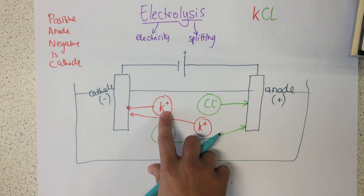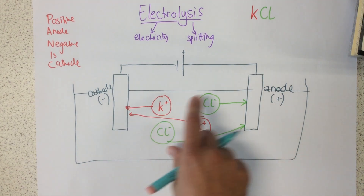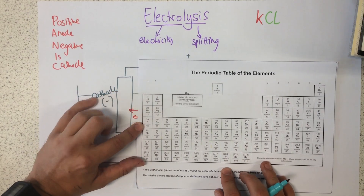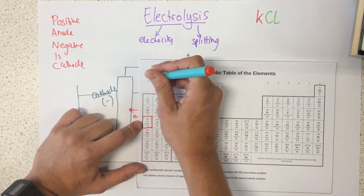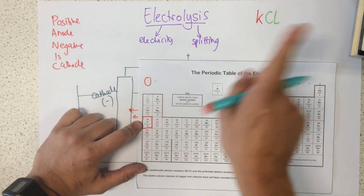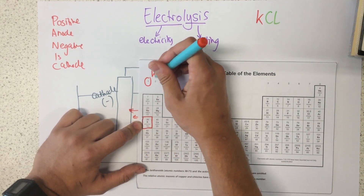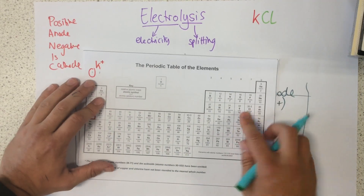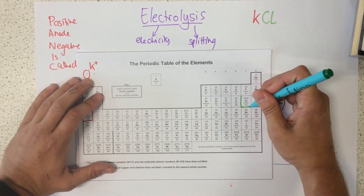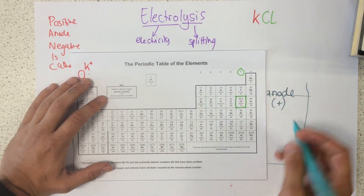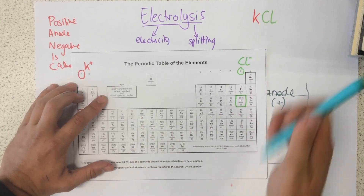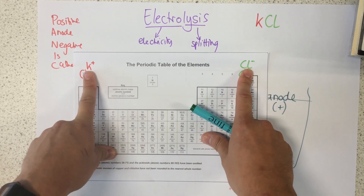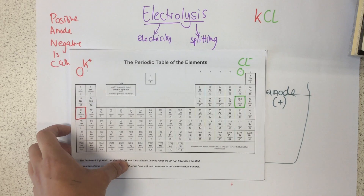Just to explain why potassium has a plus charge and chlorine has a minus charge: potassium is in group one of the periodic table, which means it needs to lose one electron to form an ion, therefore K+. Chlorine is in group seven, so it needs to gain one electron to form an ion, therefore forming Cl-. Please watch a video about forming ions or ionic bonding for more explanation.